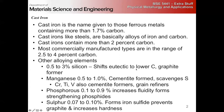Silicon is going to shift the eutectic to lower carbon. It's a strong graphite former. Often people will combine the carbon and multiply the silicon by three, add it to the carbon, and call that the effective carbon content. Manganese is essentially the opposite of silicon — it's a cementite former — whereas silicon is a graphite former. It also scavenges sulfur, which can be an impurity. Chromium, titanium, and vanadium are also cementite formers, but they're typically added more as grain refiners.